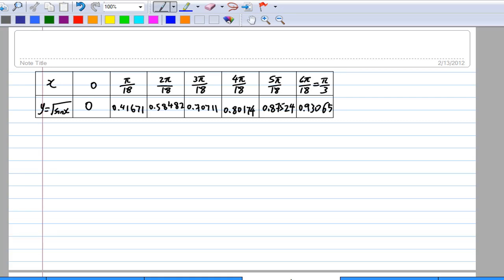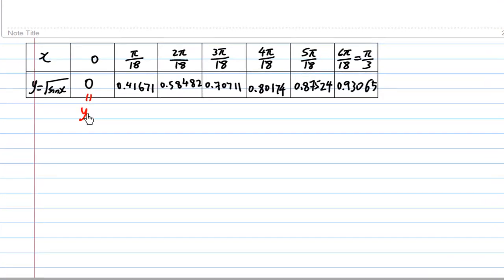After I finish filling up the values of y, I'm going to label this y as y0, y1, y2, y3, y4, y5, and y6.